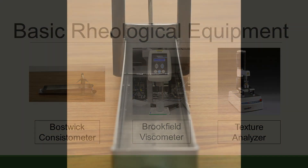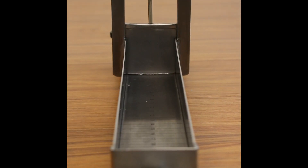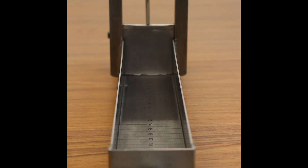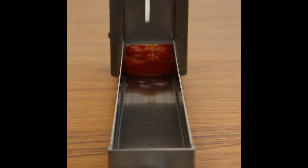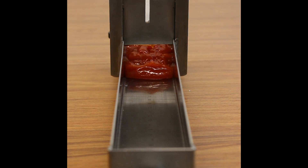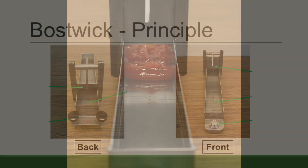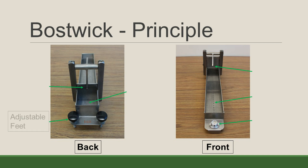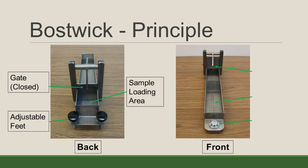The Boswick is about as basic as it comes. It's a long sloped canal in which you release product and measure how far it flows over a set time to help determine its viscosity. It's commonly used in the tomato and ketchup industry. On the back of the Boswick you have adjustable feet to change the slope, the gate which is closed in this picture, and the sample loading area.